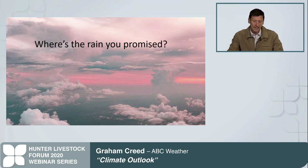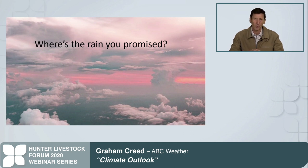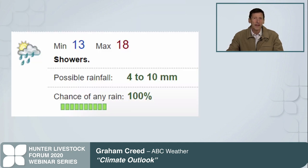So looking at rainfall to begin with - rainfall is forecast by computer models. Basically these computer models are looking at the amount of moisture available through the atmosphere, and also how much stability or instability is sitting through it as well. This is what they use to decide who's going to see rainfall and how much rainfall is going to be expected. And that's how we get a forecast with our percentage chance of rain and the probable rainfall.